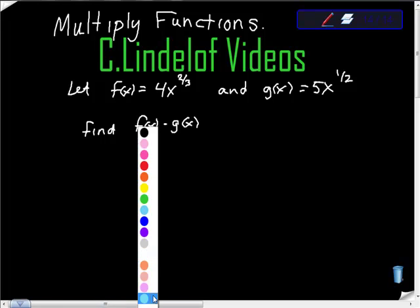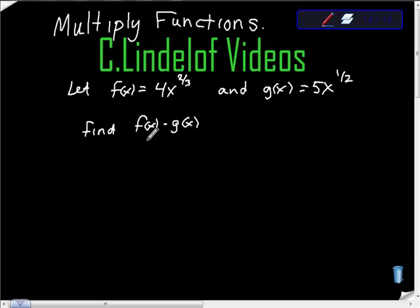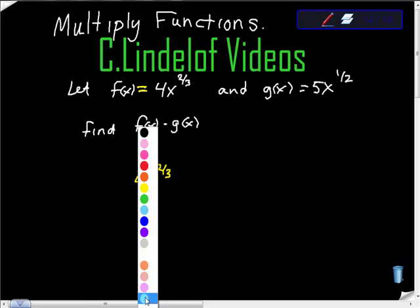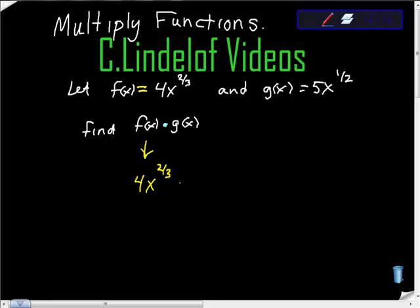It's actually as simple as it seems. We have f(x), which is clearly 4x to the two-thirds power.